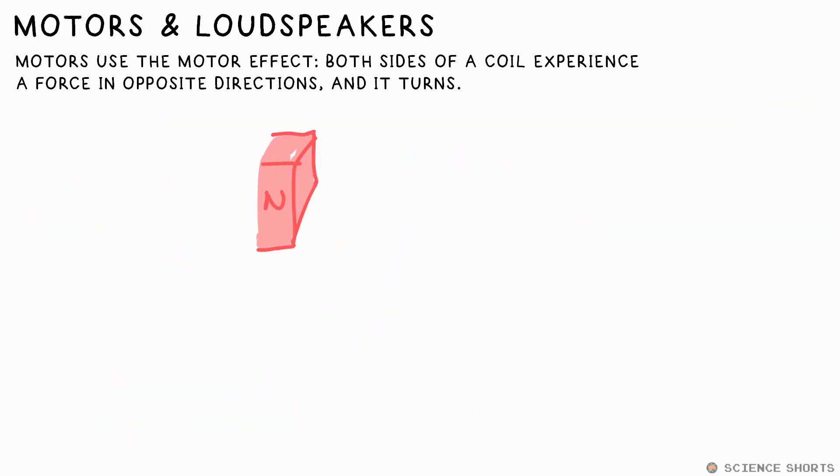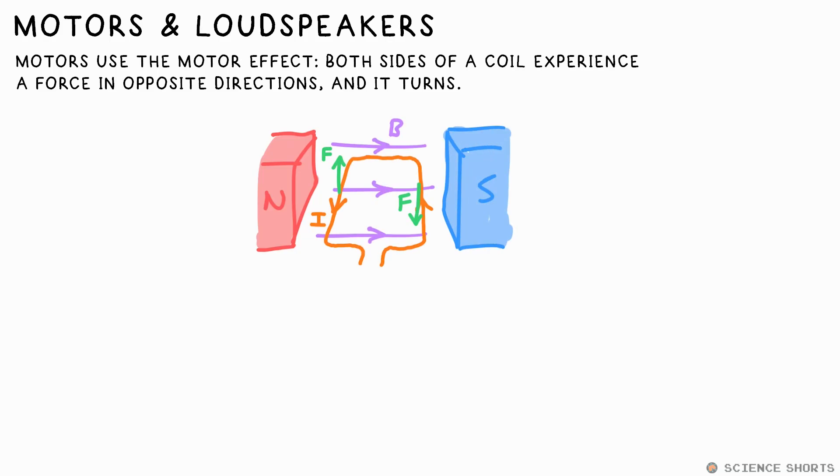Electric motors, of course, employ the motor effect by using a coil of wire that experiences opposite forces on both sides, causing it to turn. However, the current must be reversed every half a turn. Otherwise, it would just stop in the vertical position in this case, so that's why we have what we call a split ring commutator to reverse the current every half turn.